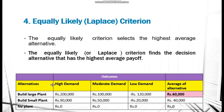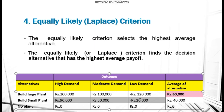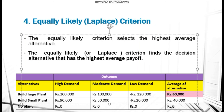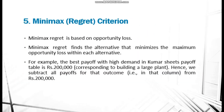The fourth method is the equally likely criterion, also called the Laplace criterion. It is very simple — it takes the average payoff for each alternative. For building a large plant: add two lakhs, one lakh, and minus one lakh twenty thousand, then divide by three to get sixty thousand. Calculate similarly for the small plant and no-plant options. The alternative with the highest average payoff is selected, which in this case is building a large plant at sixty thousand.